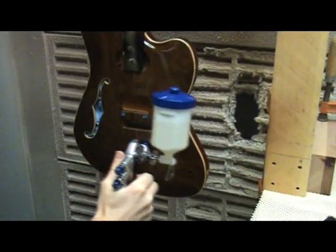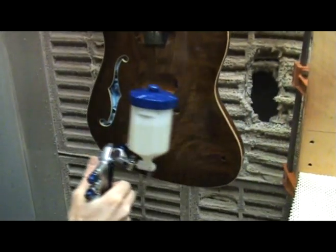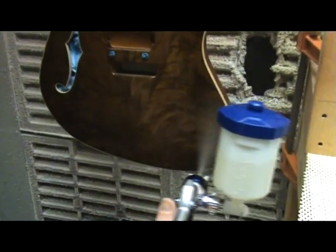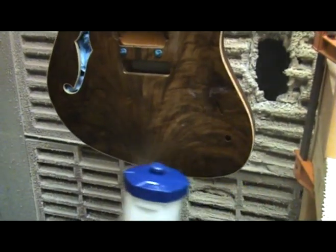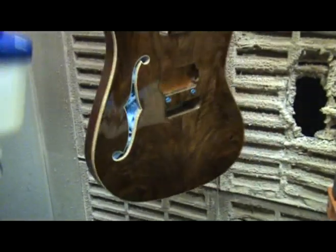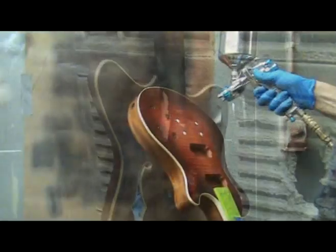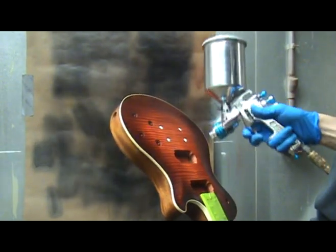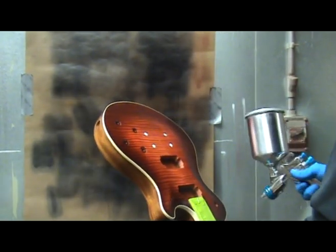Some advantages of using spray guns are faster application of material, uniform coverage which results in a more even finish with less work to rub it out, and you can do subtle color effects for toning and shading, also known as a sunburst. Also, almost any liquid finish can be sprayed.